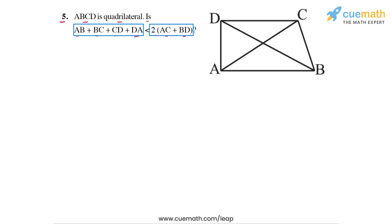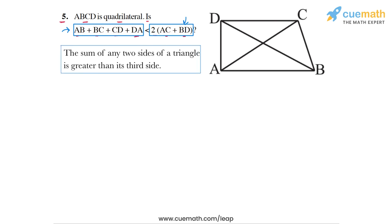So this is what we have to check: whether the sum of the four sides of the quadrilateral is less than twice the sum of the two diagonals. This is a question based on the triangle inequality property, which says that the sum of any two sides of a triangle is greater than its third side. We will apply this property to four different triangles in the quadrilateral ABCD.